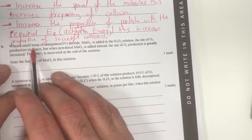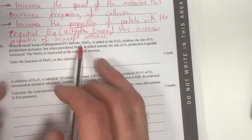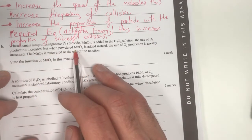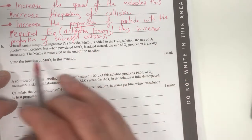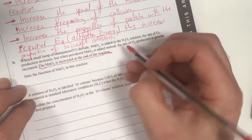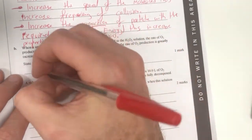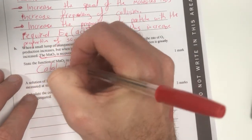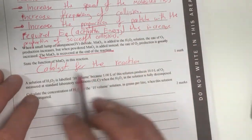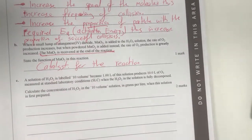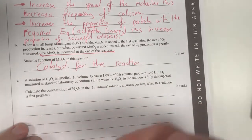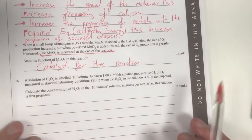Next question. When a small lump of manganese dioxide is added to the solution, the rate of O₂ produced increases, but when powdered MnO₂ is added, the rate greatly increases, and MnO₂ is recovered at the end. So having it recovered at the end means it's not participating in the reaction. Chances are it's a catalyst. So therefore it is a catalyst for the reaction. If it's not recovered at the end, it wouldn't be a catalyst, it would simply be more reactant.